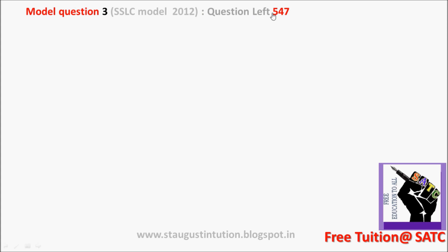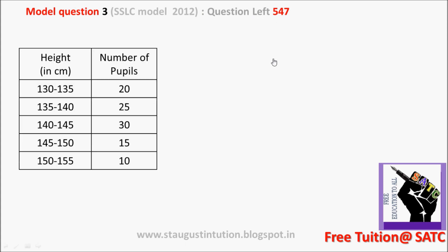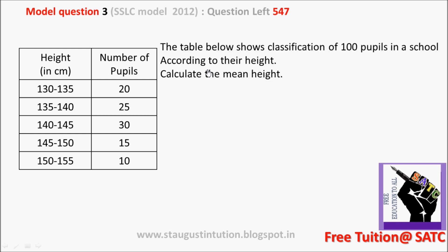Now we are going to look at 47 questions. The table below shows the classification of 100 pupils in a school according to their height. Calculate the mean height. They have taken 100 pupils in a class, classified according to their height.